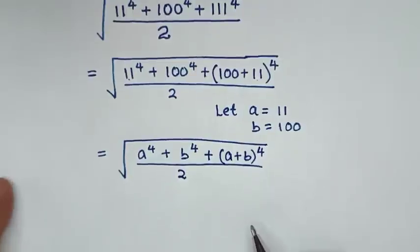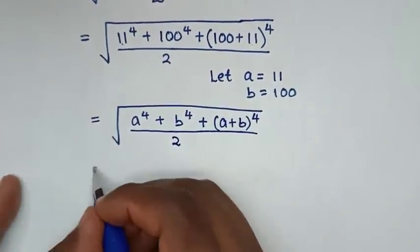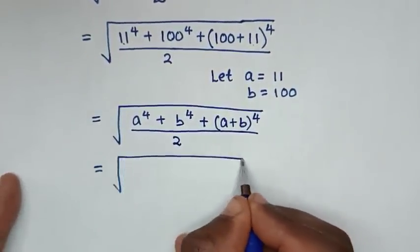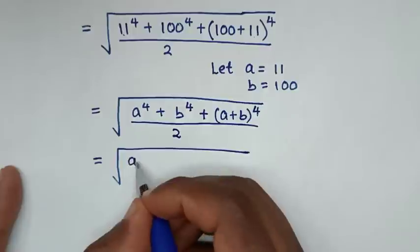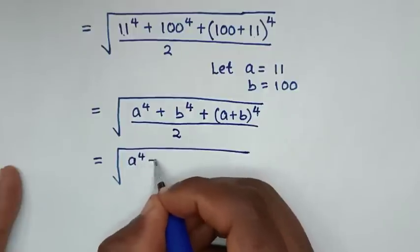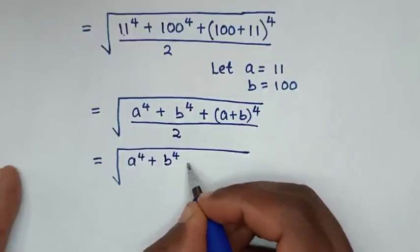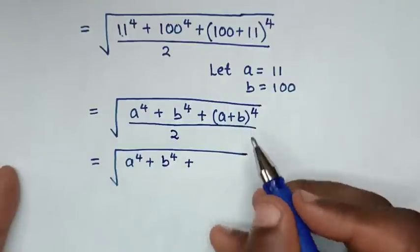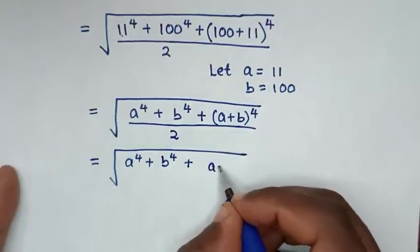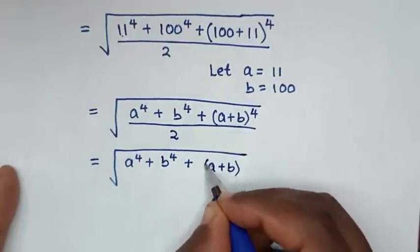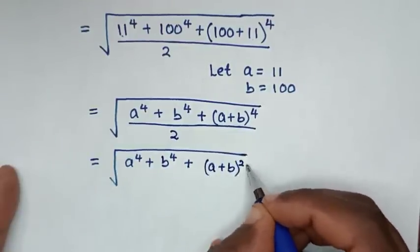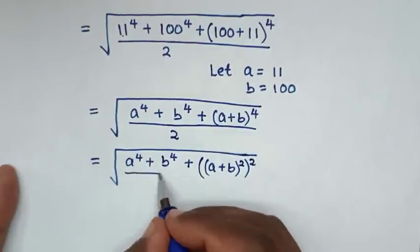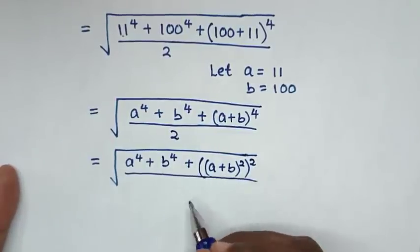So, a power 4 plus b power 4 plus (a plus b) bracket power 4 is the same as (a plus b) bracket squared, then bracket squared, over 2.